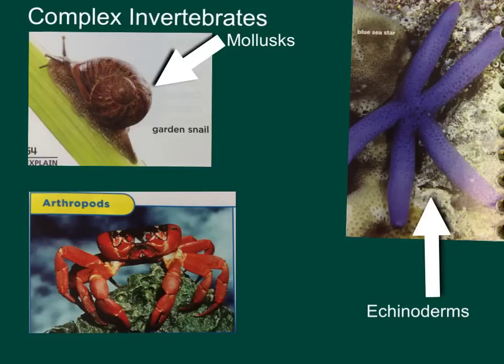The complex invertebrates include your mollusks, your echinoderms, and your arthropods. This phyla has very many different characteristics. Let's start with the mollusks.